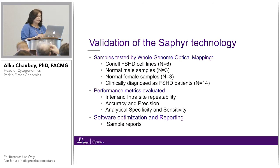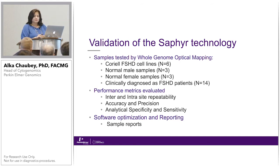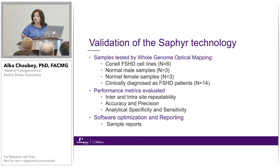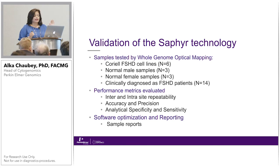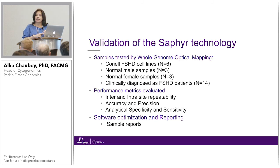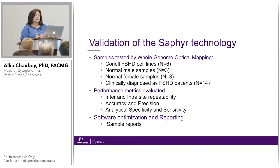For our validation, we needed a robust protocol for this very complex disorder. We obtained six Coriell cell lines that are well published in literature, three normal male and three normal female samples to ensure nothing unexpected was happening, and then clinically diagnosed FSHD patients. We assessed all the performance metrics required for an LDT validation: analytical specificity, sensitivity, accuracy, precision, and inter- and intra-site reproducibility — with BioNano participating — as well as software optimization and reporting.